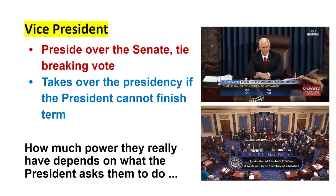The vice president presides over the Senate and casts the tie-breaking vote — as we saw with Mike Pence voting yes to break a tie on repealing a Health and Human Services family planning rule. The vice president will also go in January to certify the electoral votes. But most importantly, the vice president stands in the wings so that if the president is incapacitated, he can take over and finish the term.